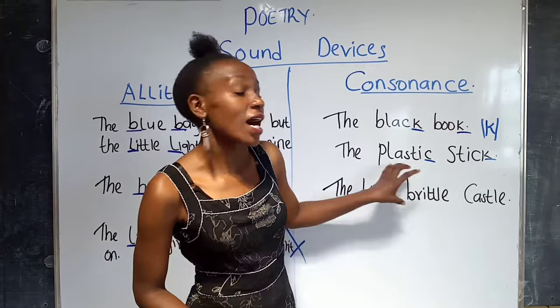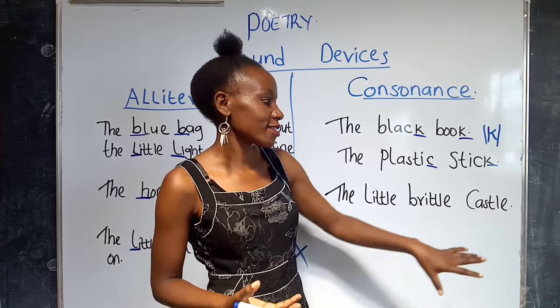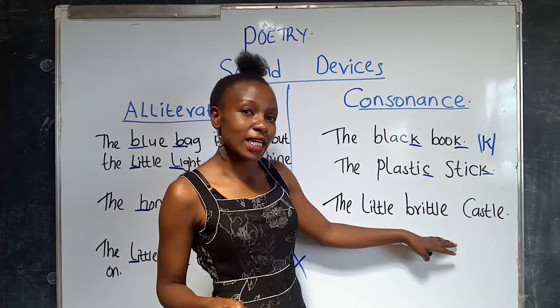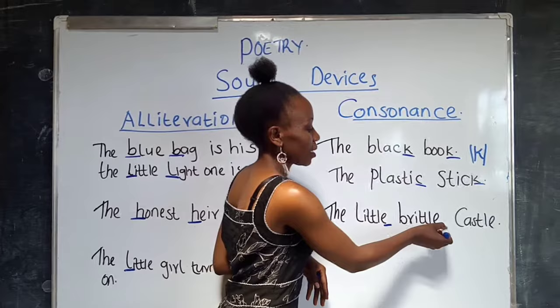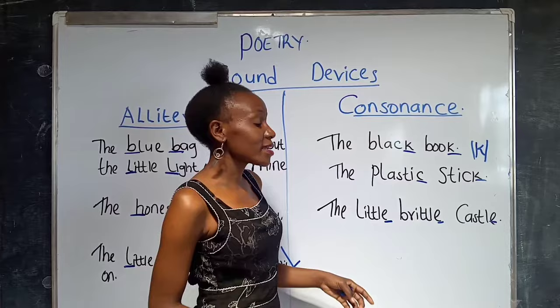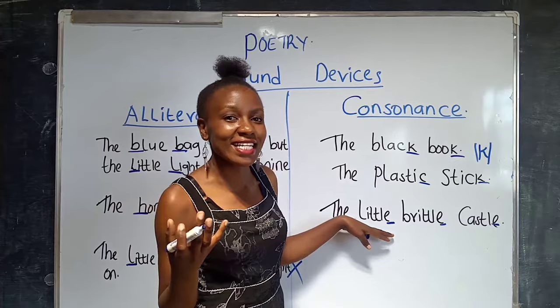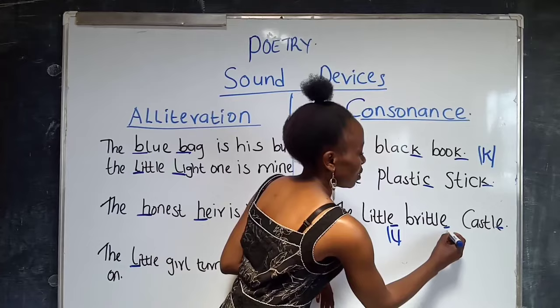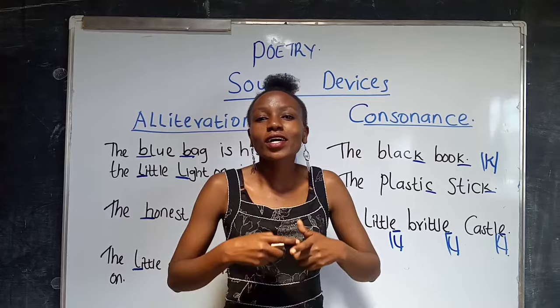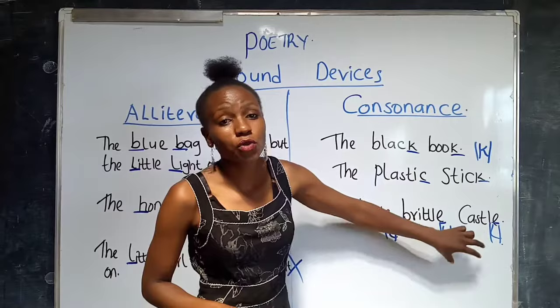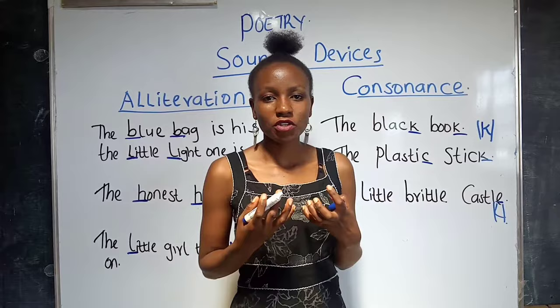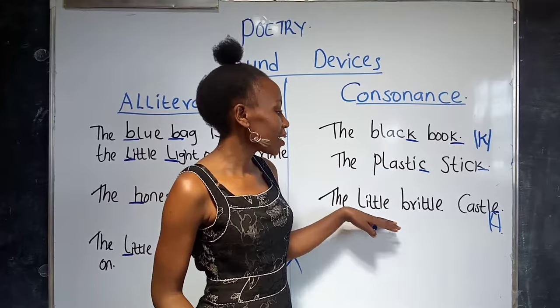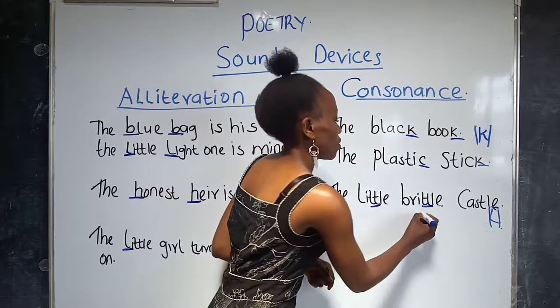Pay attention to my last example on the board. It might not be making sense but it's for the sake of your understanding: 'the little, brittle, castle.' The letters shown are vowels, but the sound we hear when we pronounce the words is the L sound. So we have L in 'little,' L in 'brittle,' and L in 'castle.' If you focus on the letters you might end up being wrong. This is consonance — look at the consonant L sound repeated in the middle of the words.